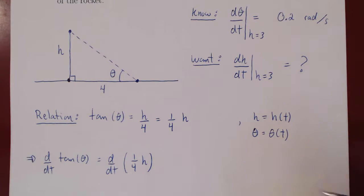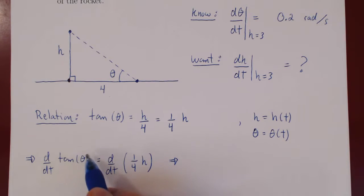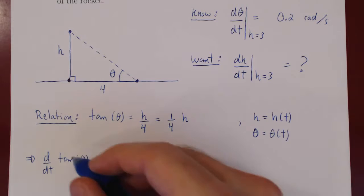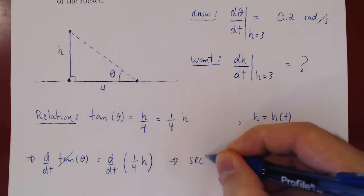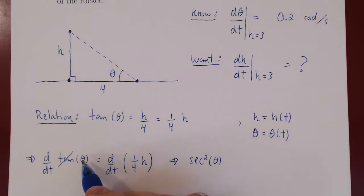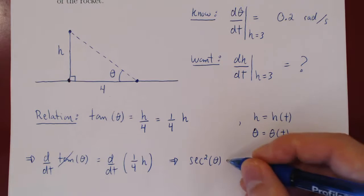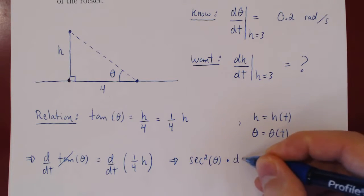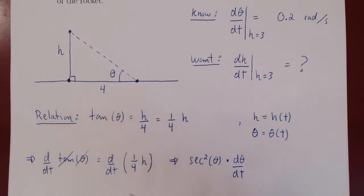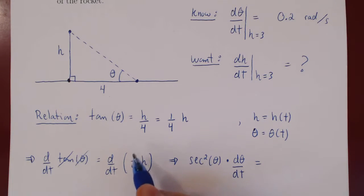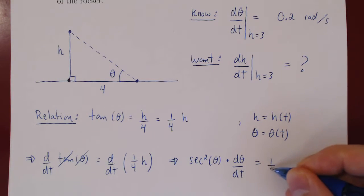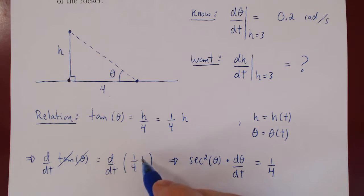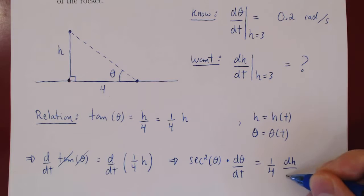We differentiate both sides with respect to t. On the left side, tangent is the outside function and the derivative of tangent is secant squared. But by the chain rule, since theta is a function of t, we multiply by d theta over dt. On the right side, one quarter is a constant multiple, so it stays, giving us one quarter times dh over dt.